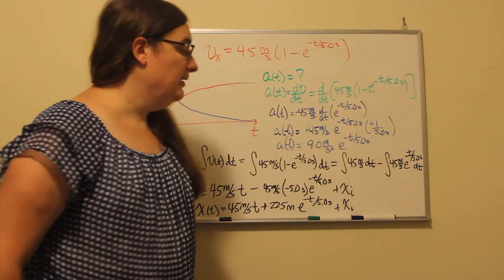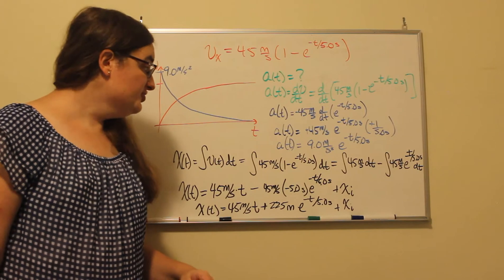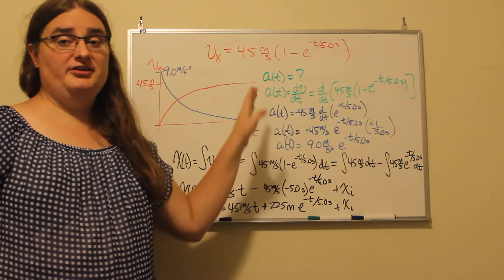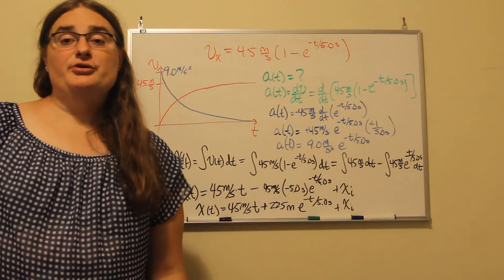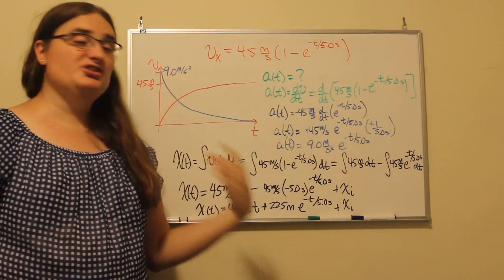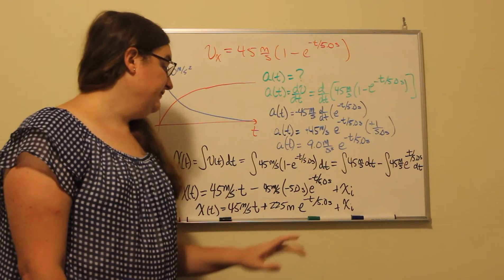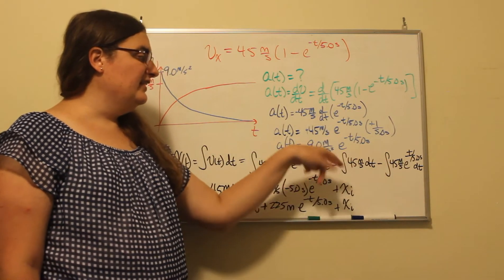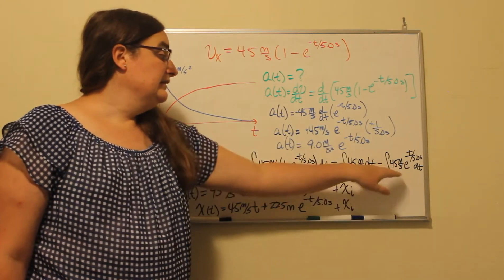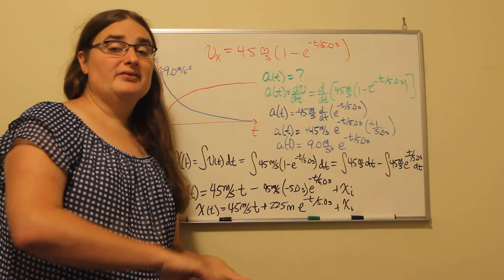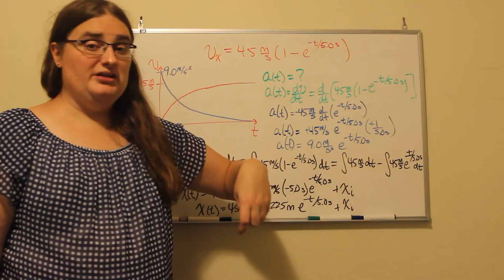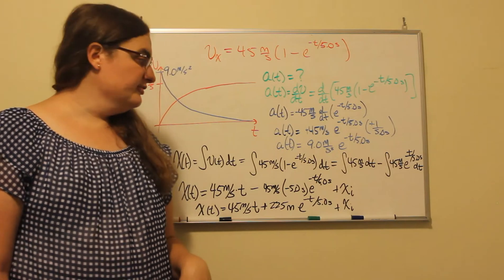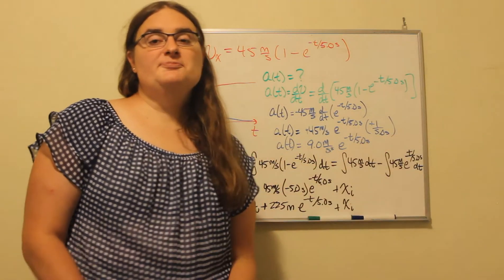We can break up the integral operation. Integrating the first term gives us 45 meters per second times time, which in the long term would show a linear increase in position as we reach terminal velocity. For the second term, we integrate 45 meters per second times e to the negative t over 5 seconds with respect to dt. Since 45 meters per second is a constant, and the integral of functions of Euler's number is the same function of Euler's number, we account for the chain rule piece using u substitution.